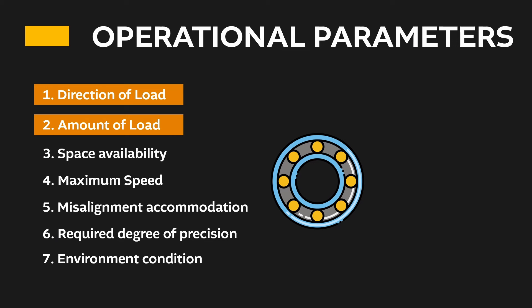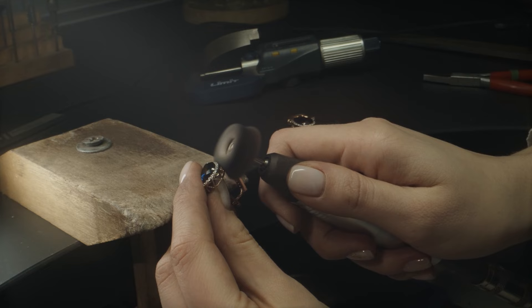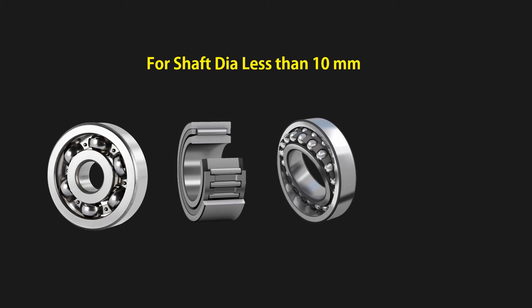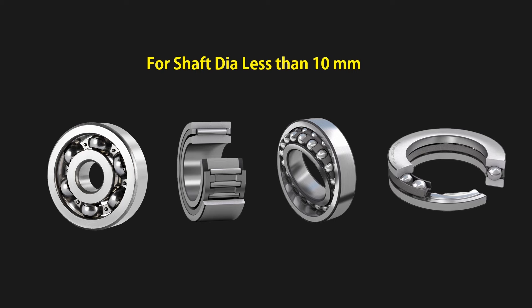Now let's understand bearing selection from the space point of view. If the shaft size is less than 10 mm, then we have only limited options of bearing type: deep groove ball bearing, needle roller bearing, self-aligning ball bearing, and thrust ball bearing. We cannot use angular contact bearing or taper roller bearing for shaft diameters less than 10 mm. If the shaft size is more than 10 mm, then we have all types of bearing options. And in case of very limited radial space, we should select needle roller bearing.